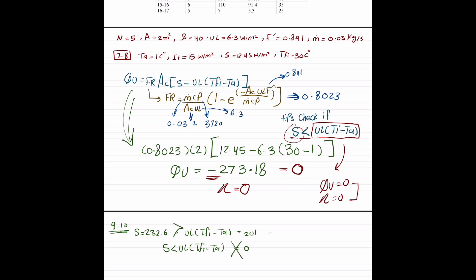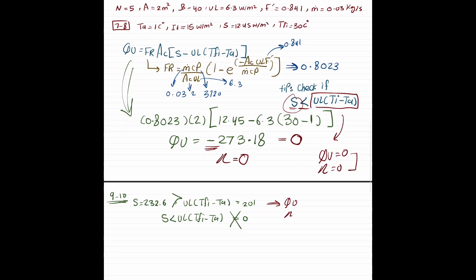Let's substitute to get the QU. FR is 0.8023 times the area 2 times 5 times S 232.6 minus this whole thing we calculated it to be 201.